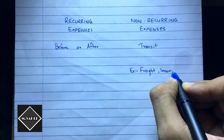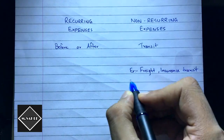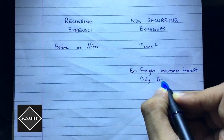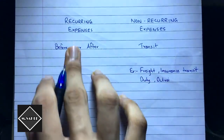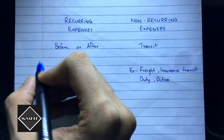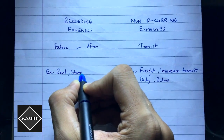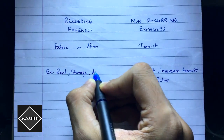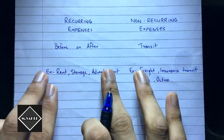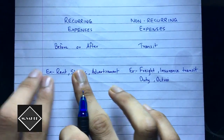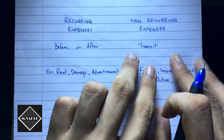For example, non-recurring expenses include freight incurred in transit, insurance on goods in transit, and octroi duty — all incurred during transit. Recurring expenses, on the other hand, include rent of showroom or warehouse, storage expenses, and advertisement to increase sales — incurred before or after transit.